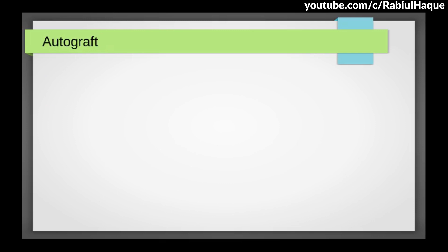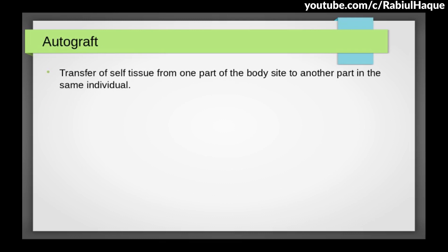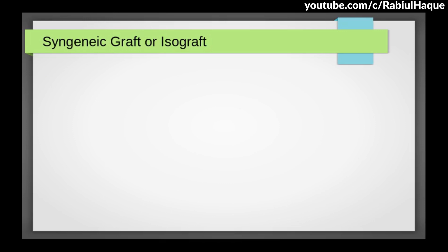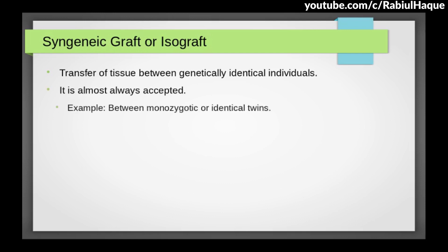Autograft involves transfer of self tissue from one part of the body to another part in the same individual. Since tissue is transferred within the same individual, it is always permanently accepted. A very common example of autograft is skin grafting in the same individual. Moving on to syngenic graft or isograft — this involves transfer of tissue between genetically identical individuals, so it is almost always accepted. An example is transplantation between monozygotic or identical twins.